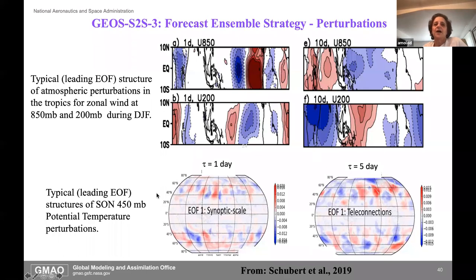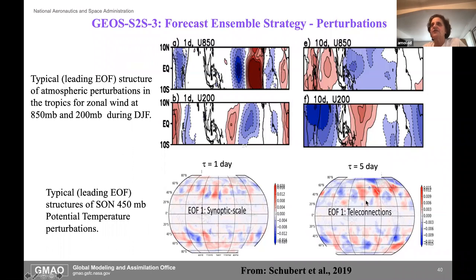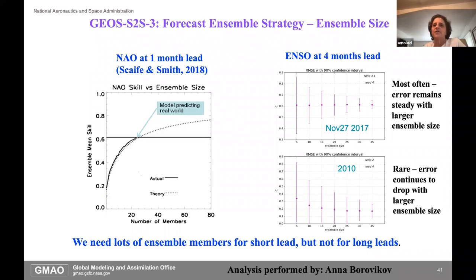In the extra-tropics, looking at the 450 mb potential temperature, at one day we see something with the smell of synoptic-scale variations; at five days we're looking at something longer related to teleconnections. The other issue with the ensemble strategy is the size. The diagram from Scaife and Smith illustrates very clearly that ensemble mean skill increases with the number of ensemble members—we were sitting down here, and our version three now brings it up to 40, so we expect skill to increase quite a bit.